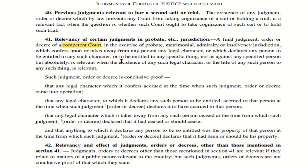Section 41 applies to four types of jurisdiction: probate, matrimonial, admiralty, or insolvency. Under these four aspects, if the court confers any right or legal character — or states that a person is entitled to something against everybody else — that is relevant. For example, if there are five brothers and the court says the first brother is entitled to a specific property against all four others, that special legal character is relevant.